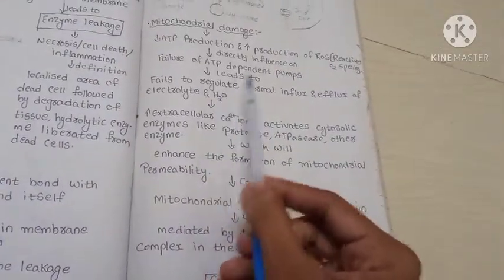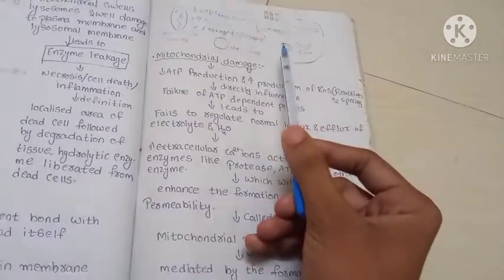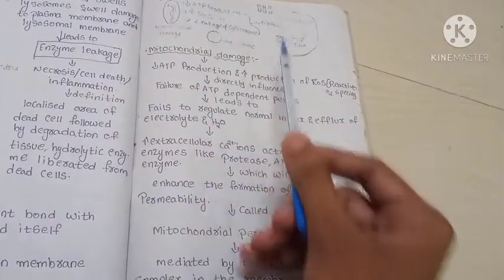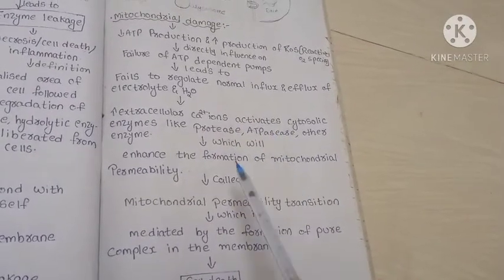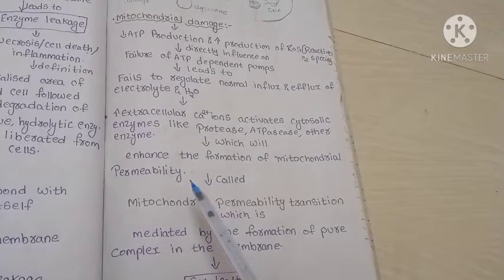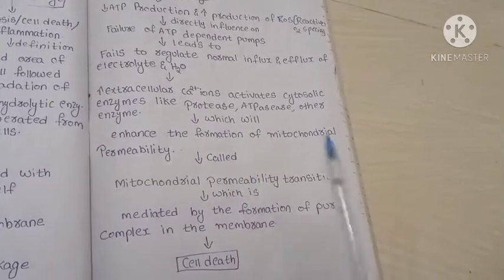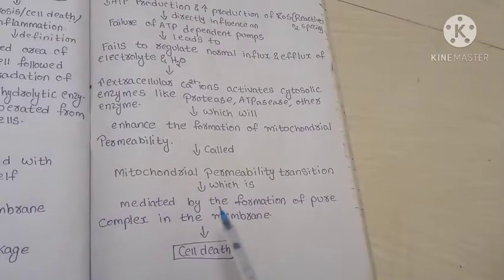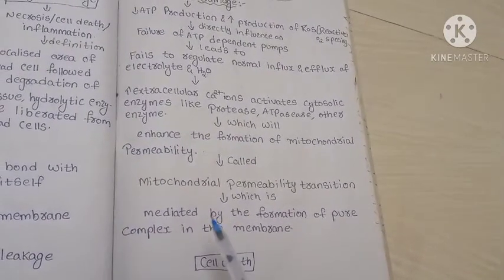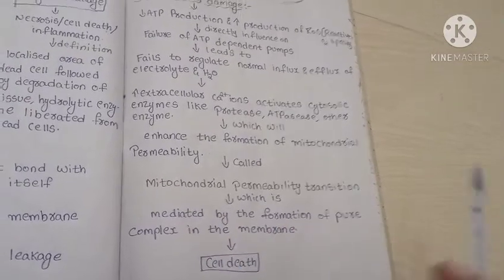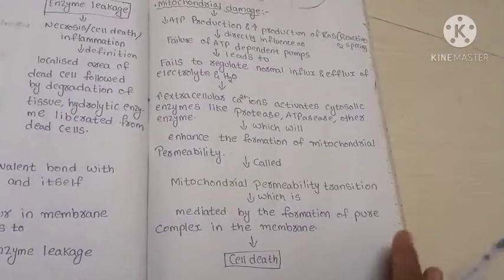The calcium ions present on the outer surface of the cell membrane enhance enzymes like proteases and ATPases, which enhance mitochondrial permeability transition. This is mediated by the formation of a pore complex called the mitochondrial permeability transition pore complex in the membrane, which leads to cell death.